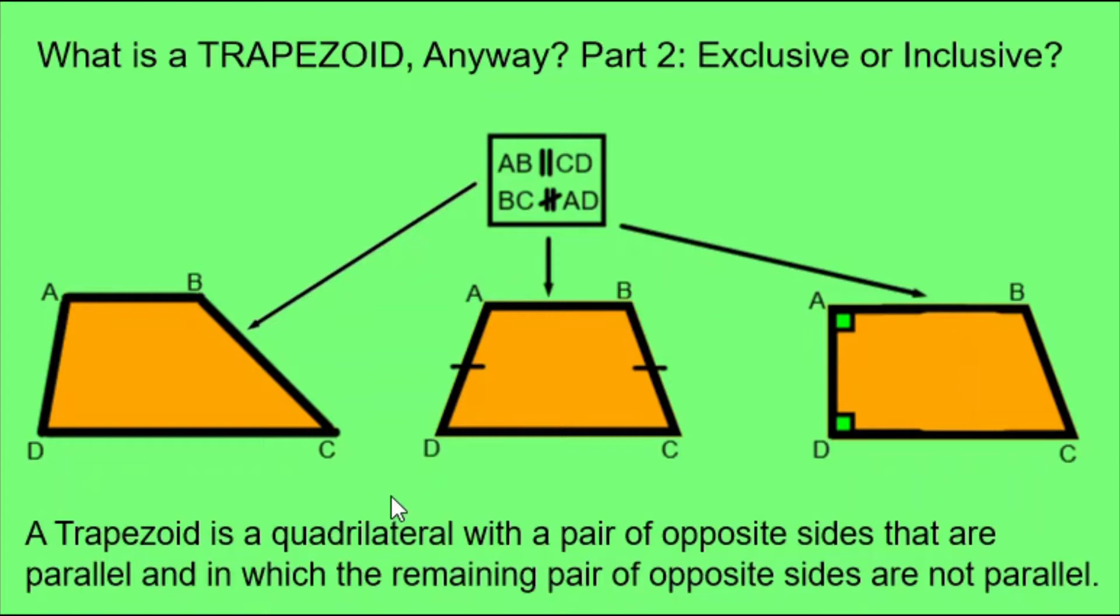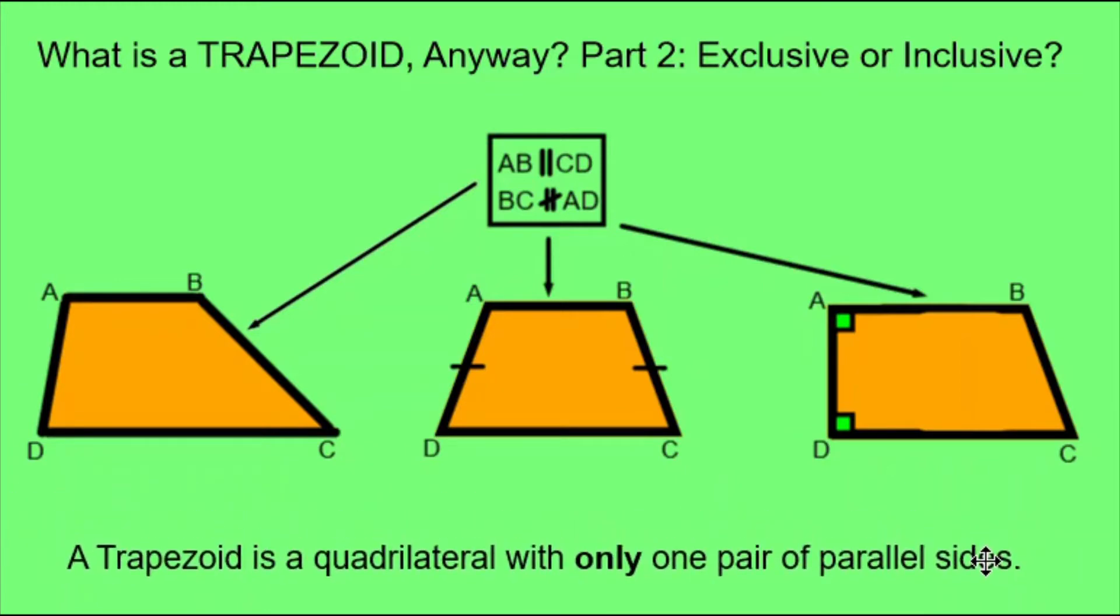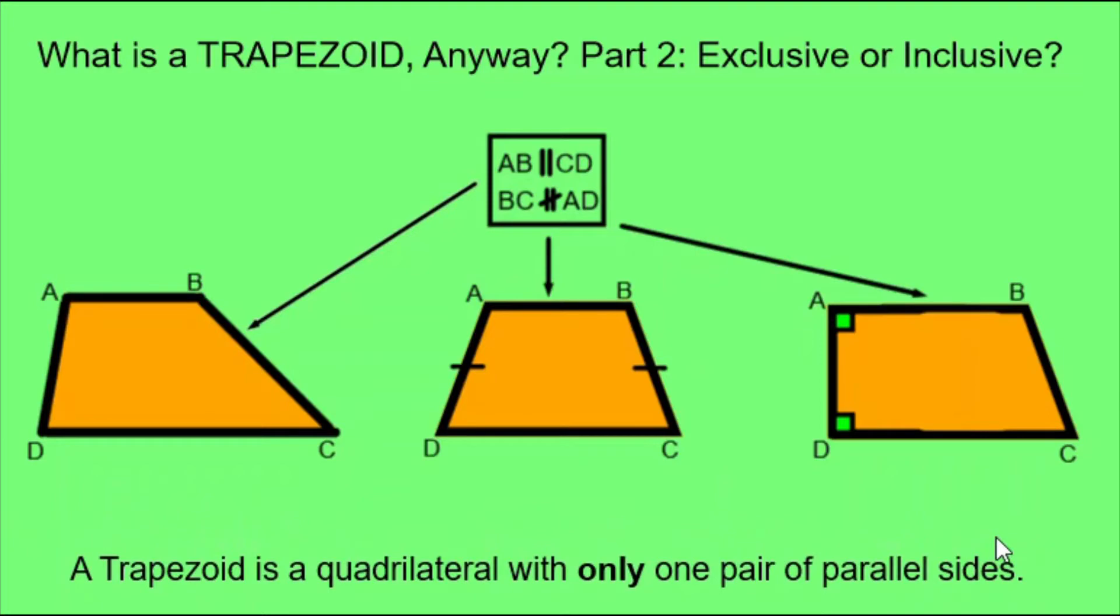I want them to be able to focus on the pair of opposite sides separately from focusing on the other pair. A shorter way of saying the same thing, though, is a trapezoid is a quadrilateral with only one pair of parallel sides. It really does say the same thing.